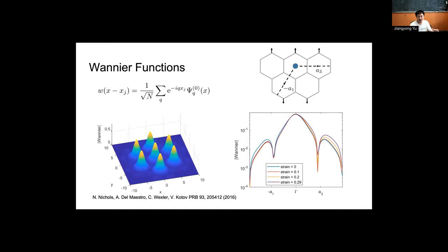A Wannier function is essentially a combination of all the different Bloch waves weighted with their momentum. We can see here on the left, we arranged six Bloch Wannier functions in the one-third filling, and it looks very similar to the density plots we've seen before.